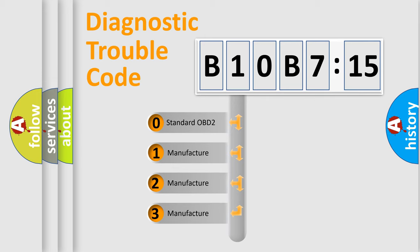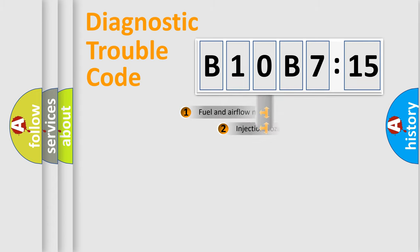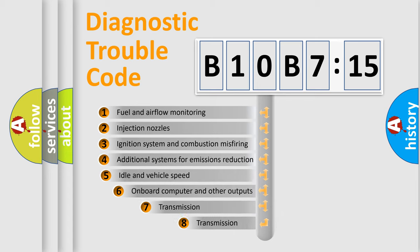If the second character is expressed as zero, it is a standardized error. In the case of numbers 1, 2, 3, it is a manufacturer-specific expression of the car-specific error.